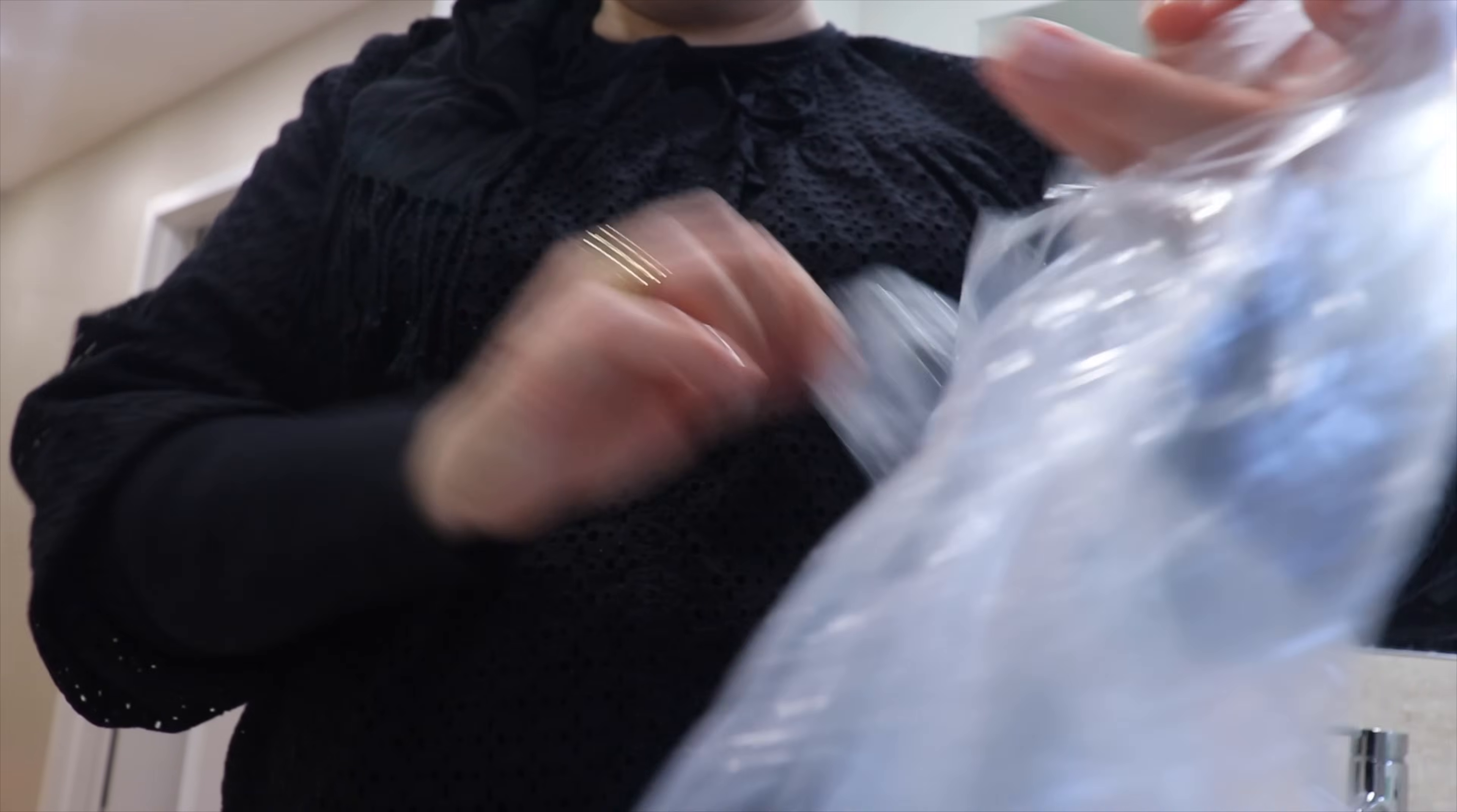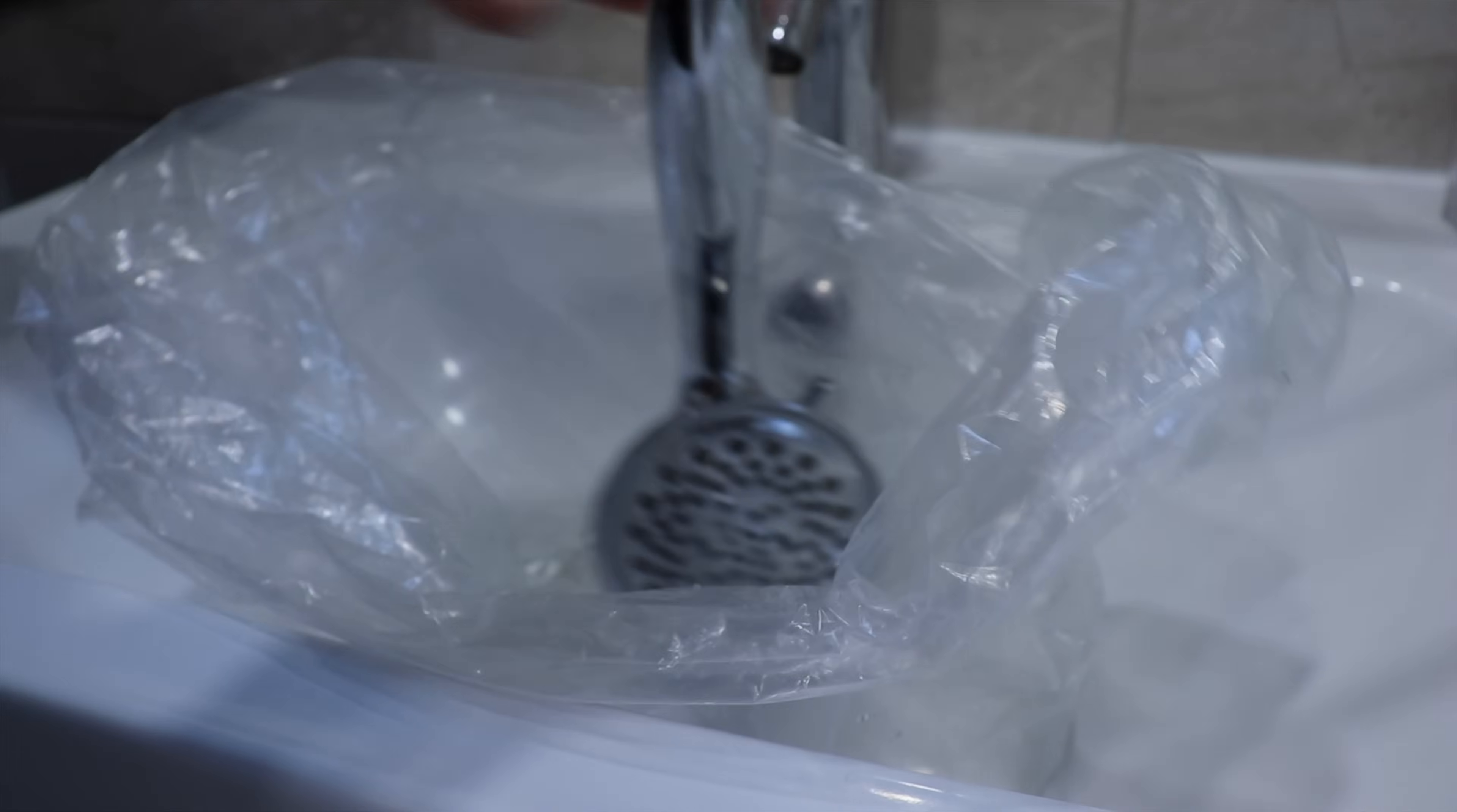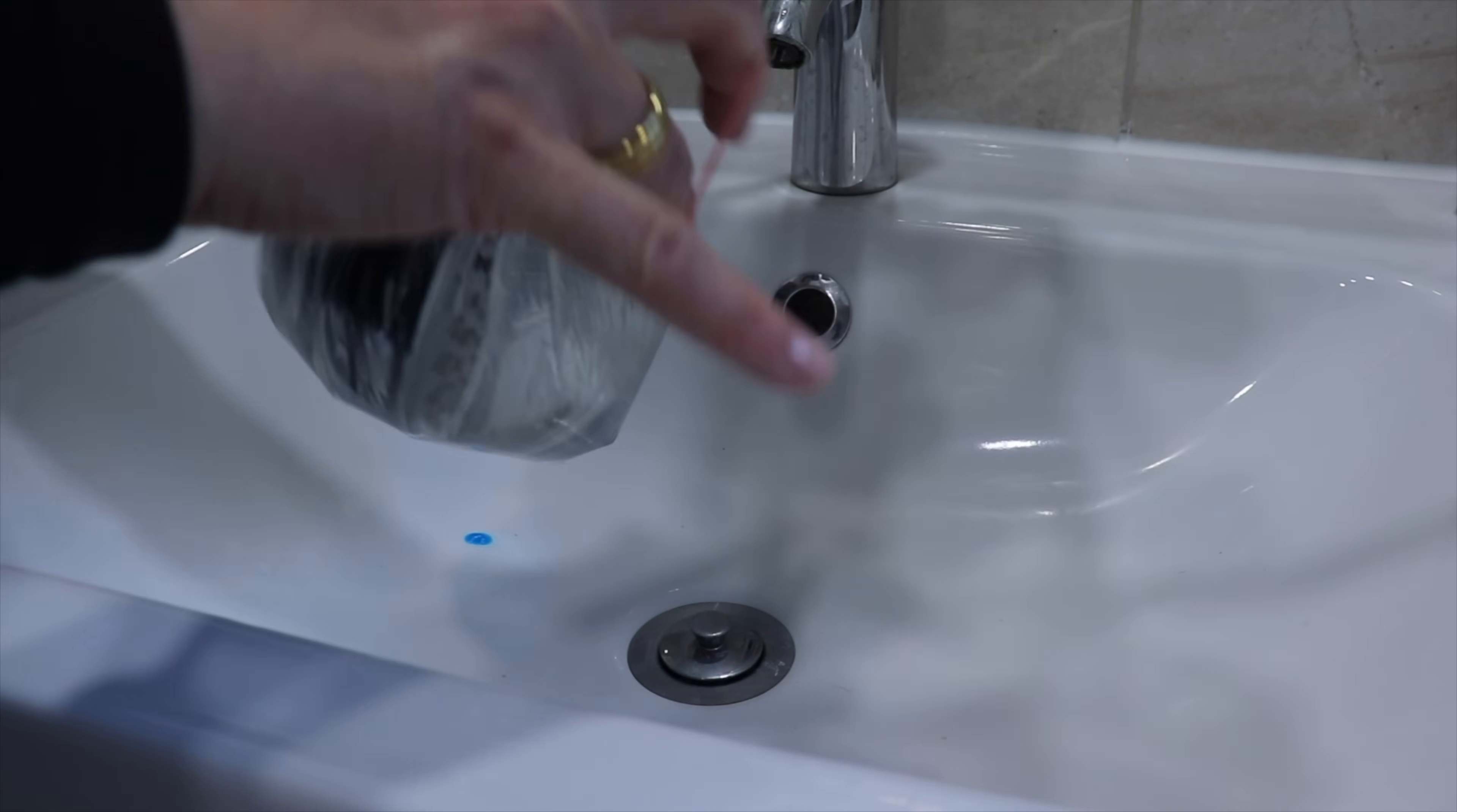While the curtain and mat are soaking, I take my shower head and I will try to remove the calcium buildup on it using the oldest trick in the book, which is adding vinegar to a plastic bag. Put the shower head in it and let it soak at the same time as the mat and curtain are soaking in the bleach.